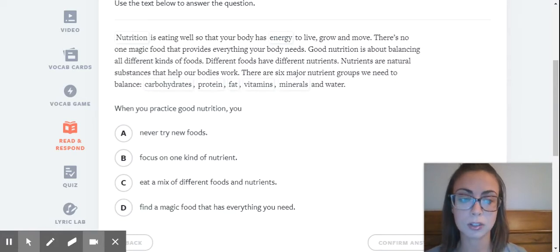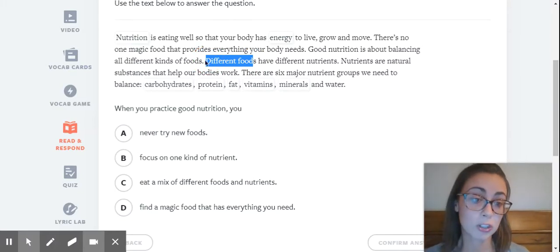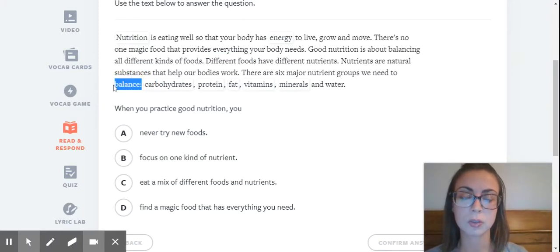There's no one magic food that provides everything your body needs. Good nutrition is about balancing all different kinds of foods. Different foods have different nutrients. Nutrients are natural substances that help our bodies work. There are six major nutrient groups we need to balance: carbohydrates, protein, fat, vitamins, minerals, and water. So our question here was when you practice good nutrition, you - so we're going to look at that.